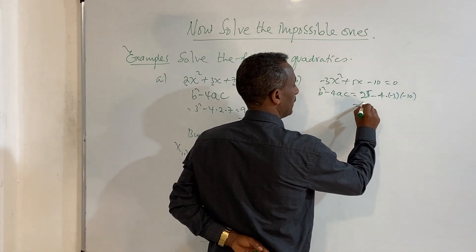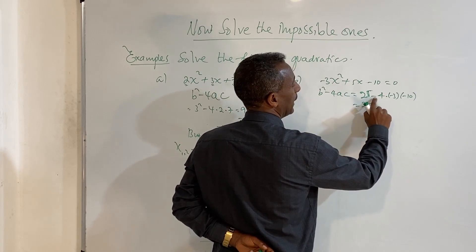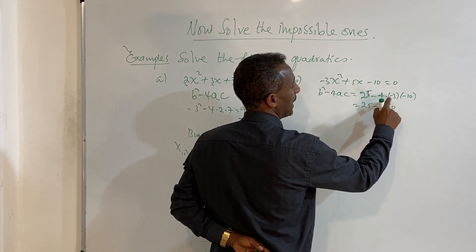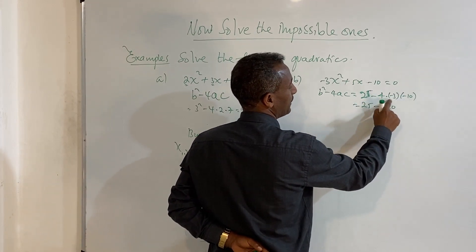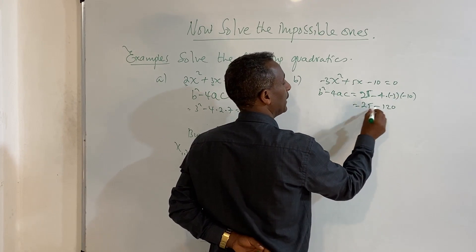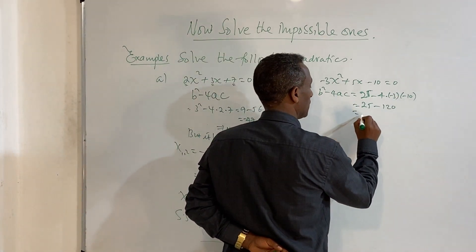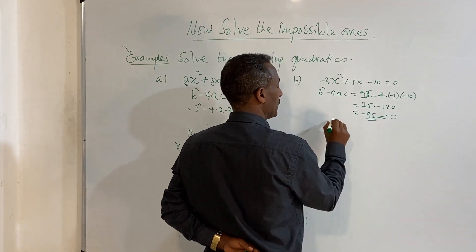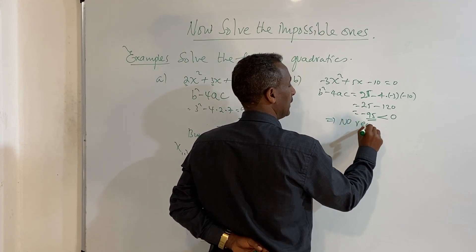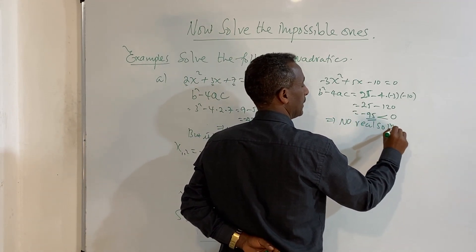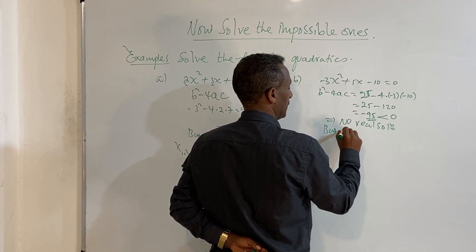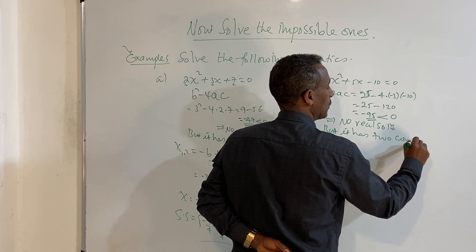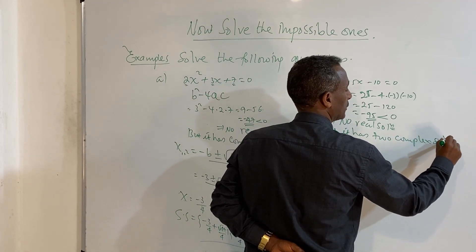25 minus, this one is 12 times minus 1 is minus 12. Minus times minus is plus, so 25 plus 120. This is negative 95. This is less than 0, which means no real solution, but it has two complex solutions.